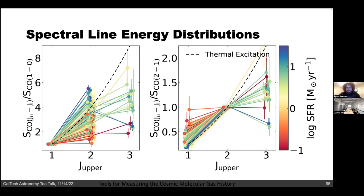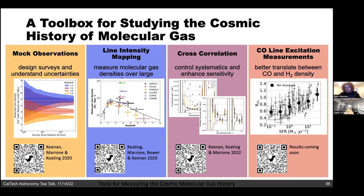To wrap up: the key takeaway is that measuring molecular gas density over cosmic time is an exciting area of open research in submillimeter astronomy. We're developing a number of tools — variance characterization for survey design, cross-correlation techniques for systematics mitigation, and CO excitation calibrations — that are going to allow much better measurements in the not-too-distant future. Thanks for your time and I'm happy to answer questions.